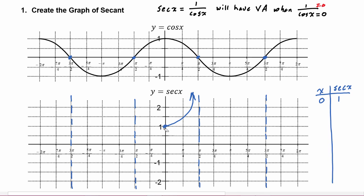As the y value of cosine approaches zero, the y value of secant is going to approach infinity. And the same going towards this asymptote over here — as the y value of cosine goes to zero, since that's the denominator of a fraction, as the denominator goes to zero the fraction goes to infinity.